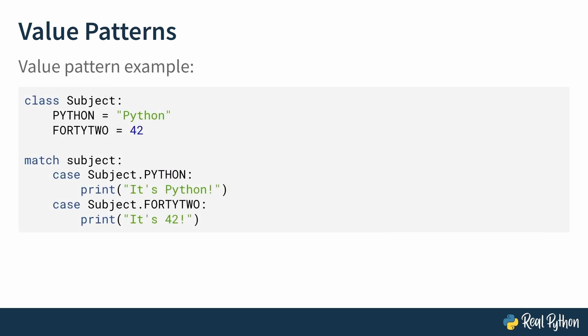So here's how you can adapt the previous example using value patterns instead. Create a class subject with the class attributes Python equals the string Python and 42 equals the integer 42. Now match subject, lowercase s, case capital S subject dot Python, print it's Python, case capital S subject dot 42, print it's 42. The subject class here provides the namespace for the values Python and 42.